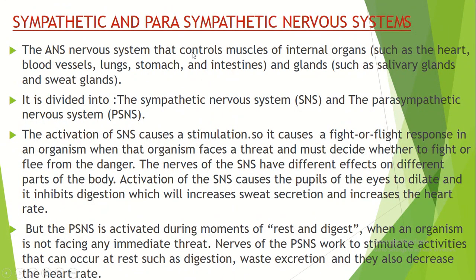The Autonomic Nervous System controls the muscles of the internal organs — the heart, blood vessels, lungs, stomach, intestines, and gland systems such as the salivary glands. It is divided into Sympathetic and Parasympathetic. The activation of the Sympathetic Nervous System causes stimulation and a fight-or-flight response in an organism.